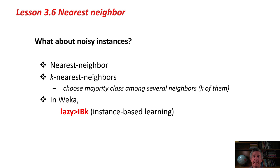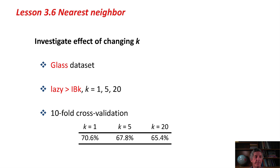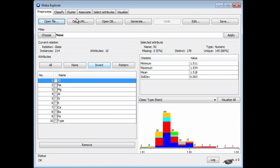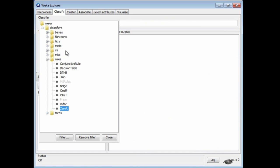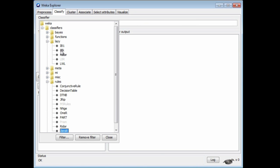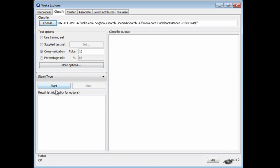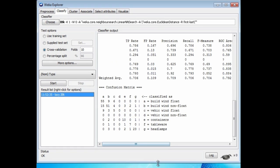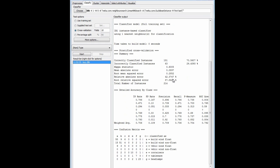In Weka, it's called IBK, instance-based learning with parameter k, and it's in a lazy class. Let's open the Glass data set, which is here. Go to Classify, and choose the lazy classifier IBK. Let's just run it. We get an accuracy of 70%, 70.6%. The model is not really printed here because there is no model. It's just a set of training instances. We're using 10-fold cross-validation, of course.